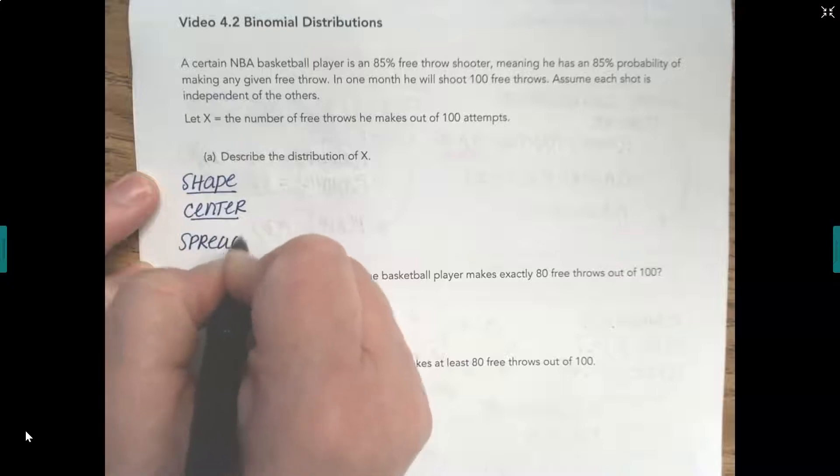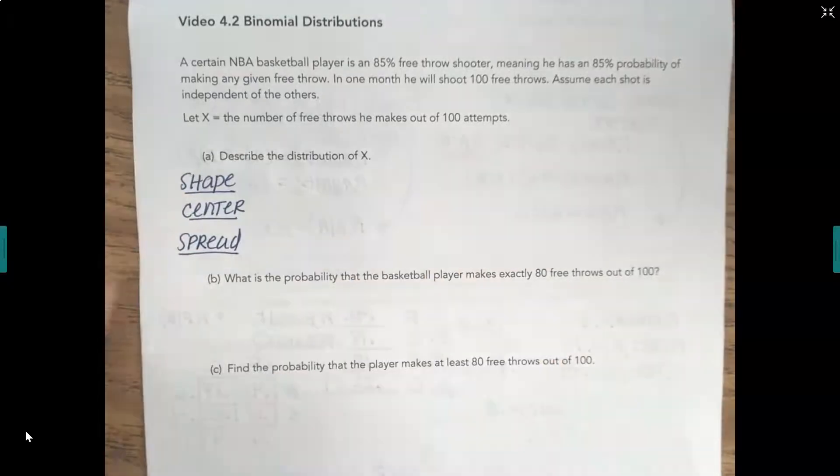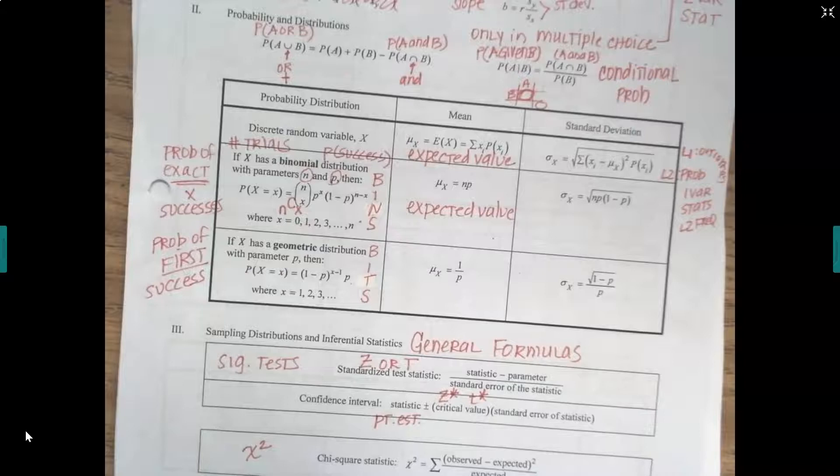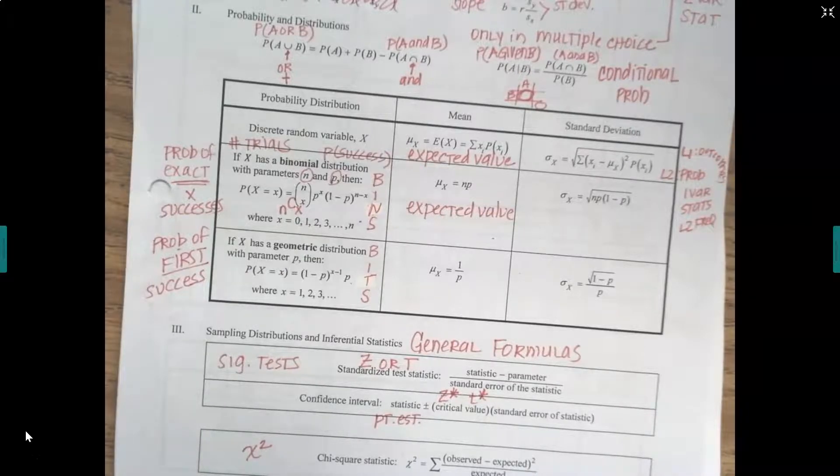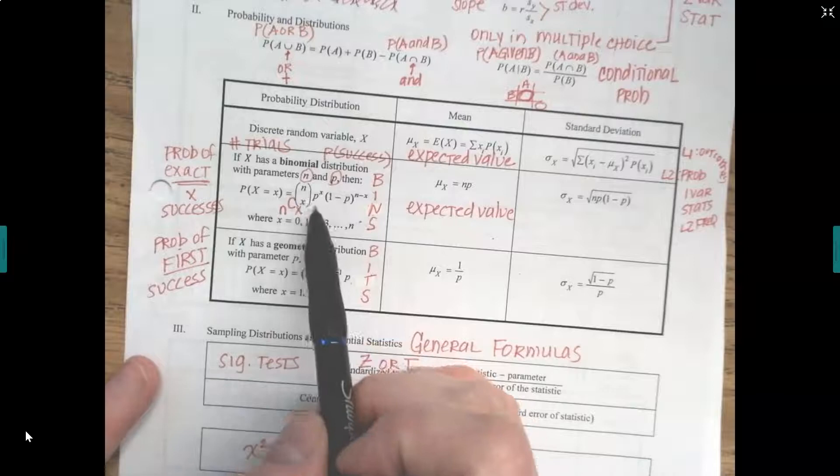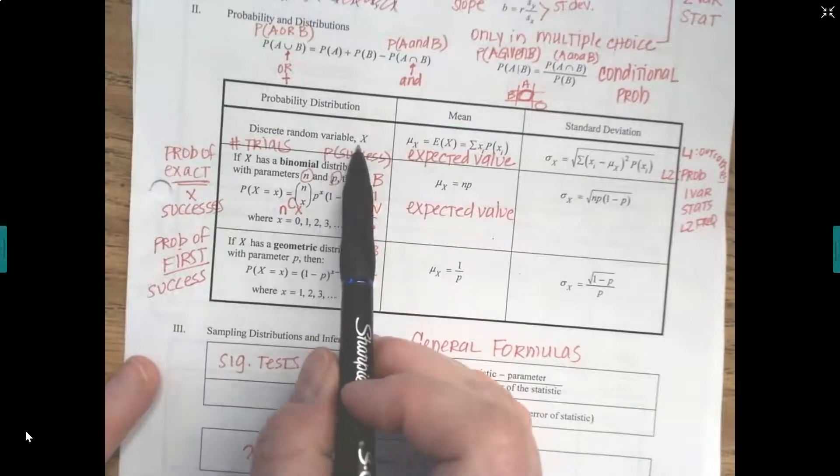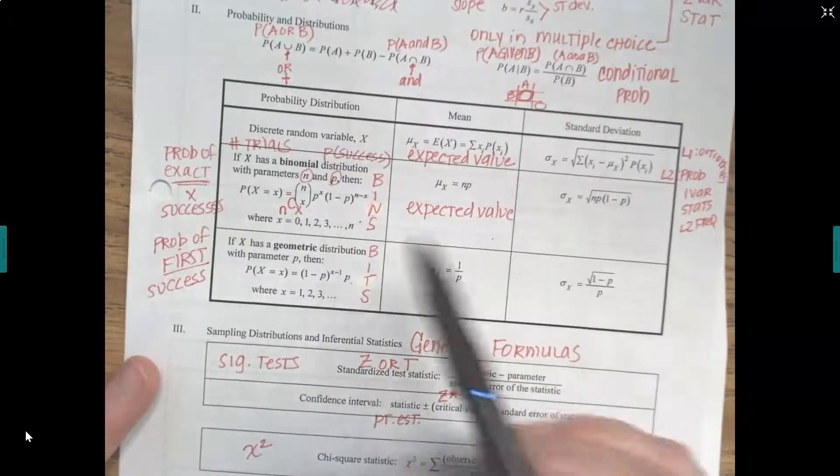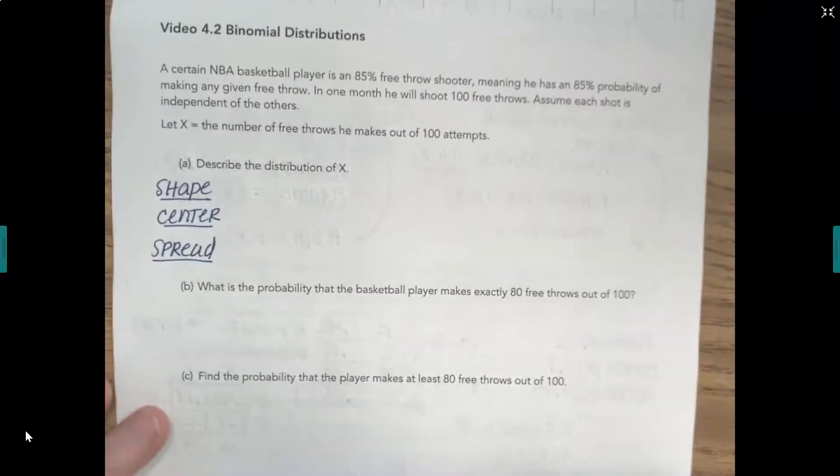But before we do that, we're talking about the random variable X. And when you have an 85% free throw shooter, you've got to start thinking binomial. So here's my annotated formula sheet. For the random variable X, we think it's going to actually be this binomial. So let's take a look and check our conditions for binomial.